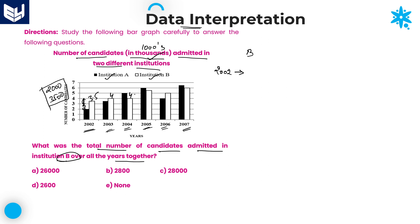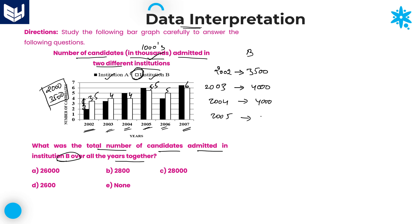The Institute B values are: 3.5 for 2002, 4 for 2003, 4 for 2004, and in between 5 and 6 so it is 5.5 for 2005 — and note that Institute B is indicated by the white-colored bar. Then 5 for 2006 and 6 for 2007. So: 2002 = 3,500; 2003 = 4,000; 2004 = 4,000; 2005 = 5,500; and 2007 = 6,000.